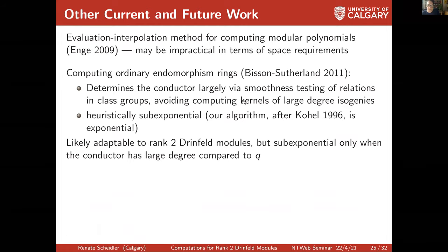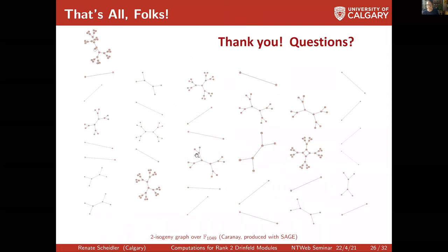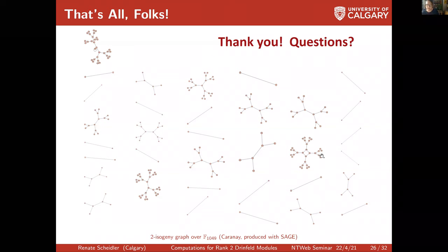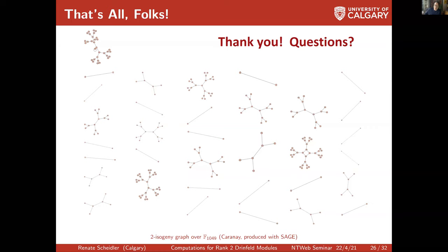I'll leave you with a nice picture: since we can't draw our things so nicely, this is an isogeny graph for elliptic curves — the two-isogeny graph over F_{10^{1049}}, generated and drawn with SAGE by Karanai. This is not the whole thing; isolated vertices are missing, so we only show the non-isolated components. You can see nice little components and beautiful volcanoes. That's the progress we've made so far on Drinfeld modules, and I'm happy to take questions.